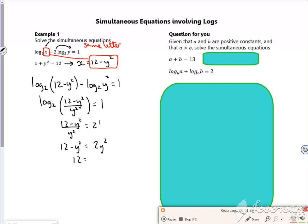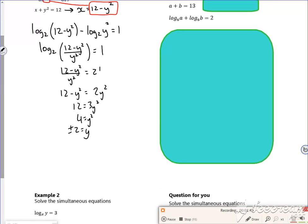12 minus y squared is 2 lots of y squared. So I've got 12 is 3y squared. 4 is y squared. Plus or minus 2 for y. Now, can I do that? Can I use plus or minus 2? No, because I need y to be greater than 0. So y is greater than 0, therefore y is equal to 2.